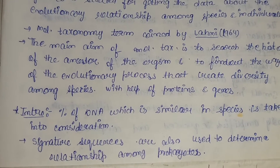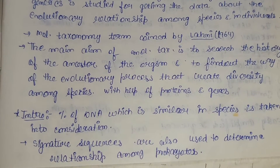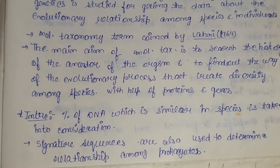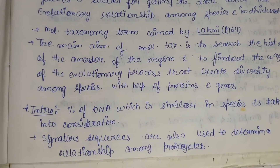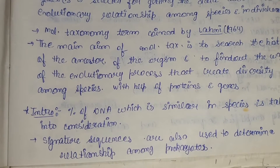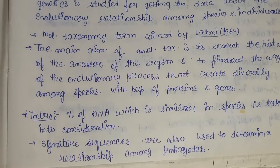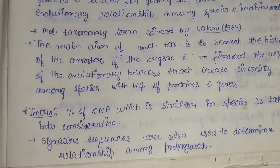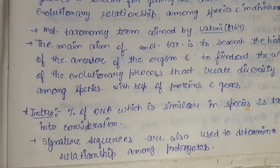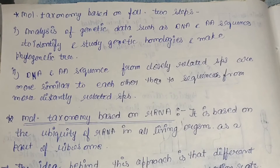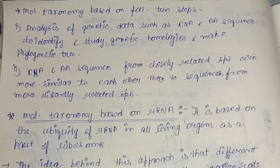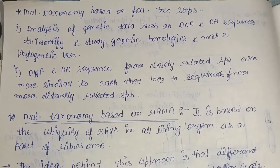In molecular taxonomy, the percentage of DNA that is similar in species is taken into consideration. Signature sequences are also used to determine the relationship among prokaryotes. Signature sequences are basically continuous patterns of amino acids, 10 to 15 residues long, that are associated with a particular structure or function in proteins. Molecular taxonomy is based on two steps: first is the analysis of genetic data such as DNA and amino acid sequences to identify and study genetic homologies.